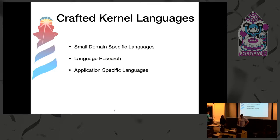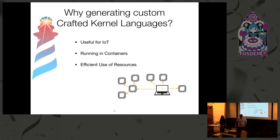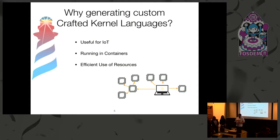So, what are crafted kernel languages? The idea is that we want to produce as many languages and runtimes as we need — for small domains or for specific domains — and we want to have a given language that gives us support for implementing our problem, but not much more, because we want small languages. This is useful for IoT, for resource-constrained devices, but also when we are paying by resources, for example in cloud computing or virtualization, where we only want to pay for what we are really using.